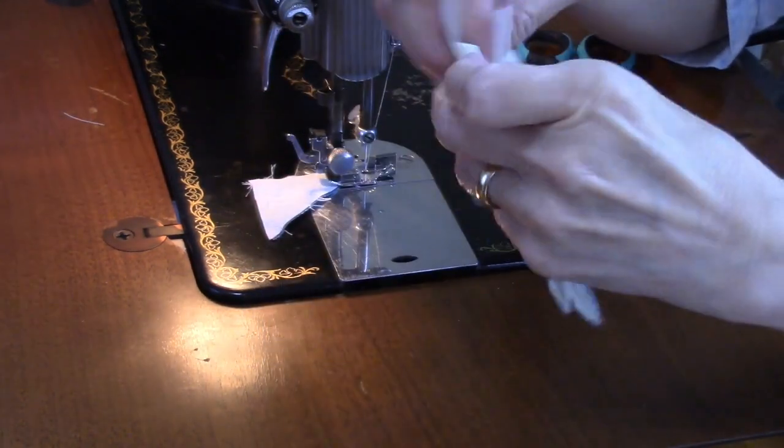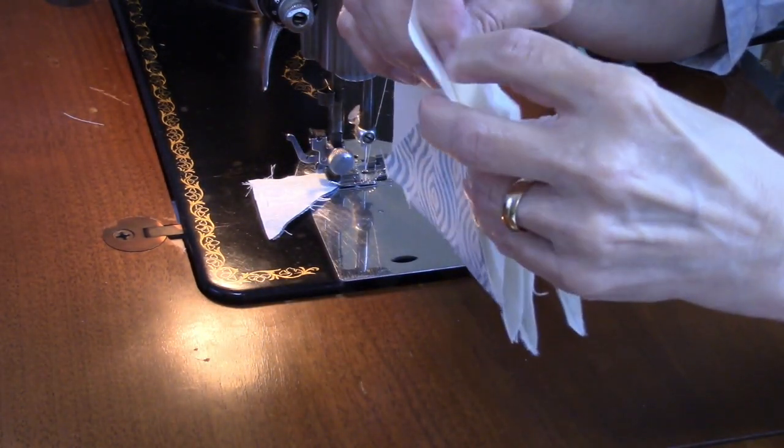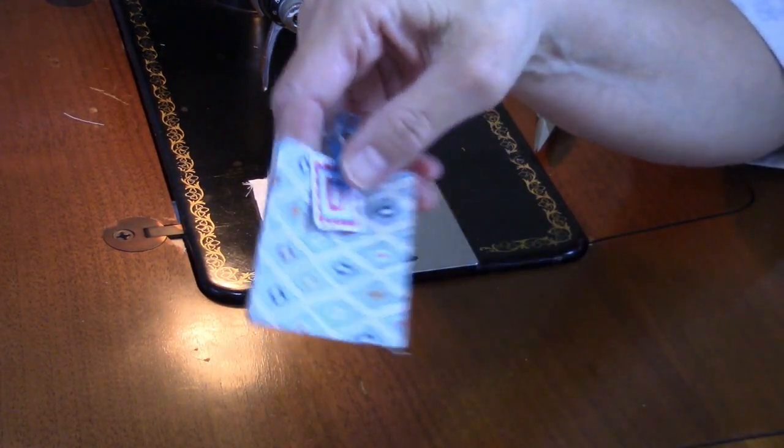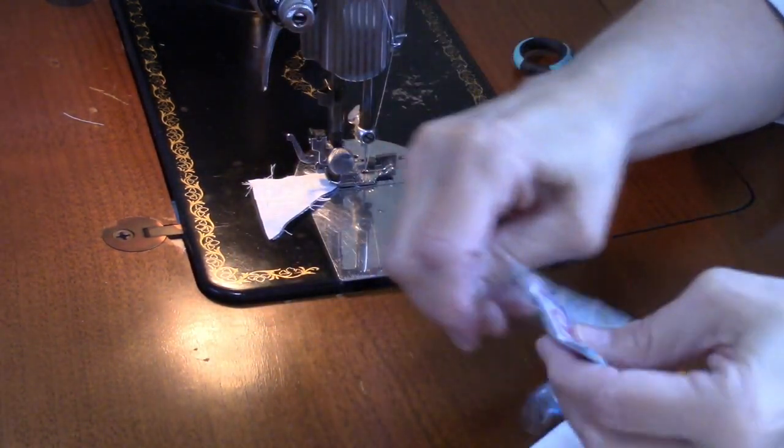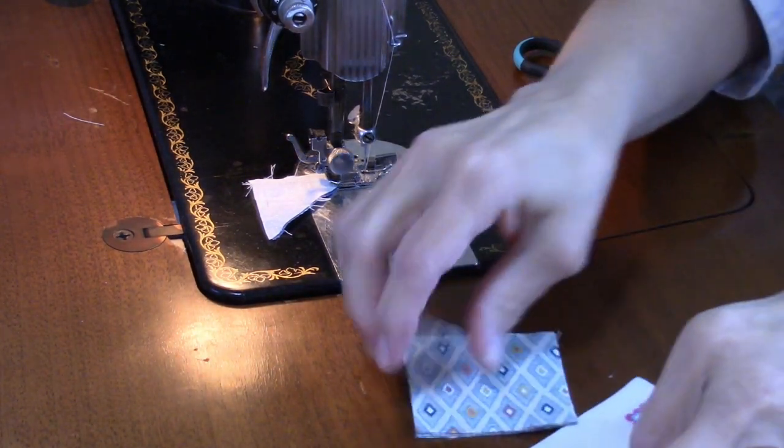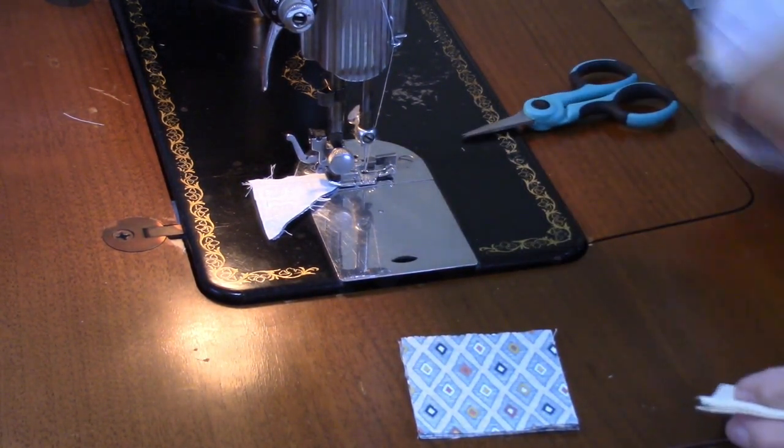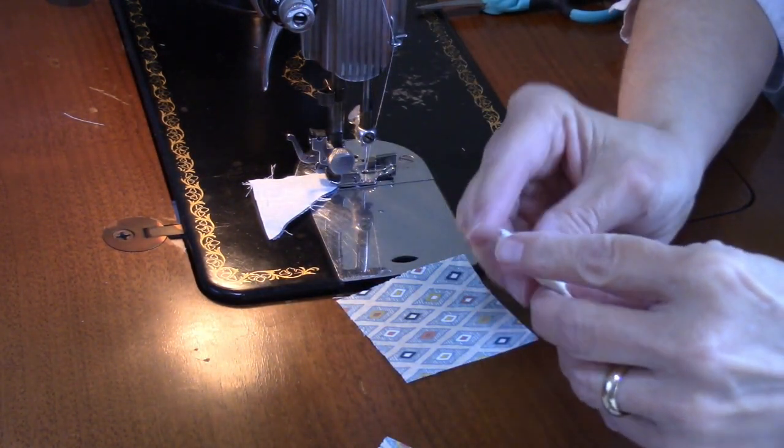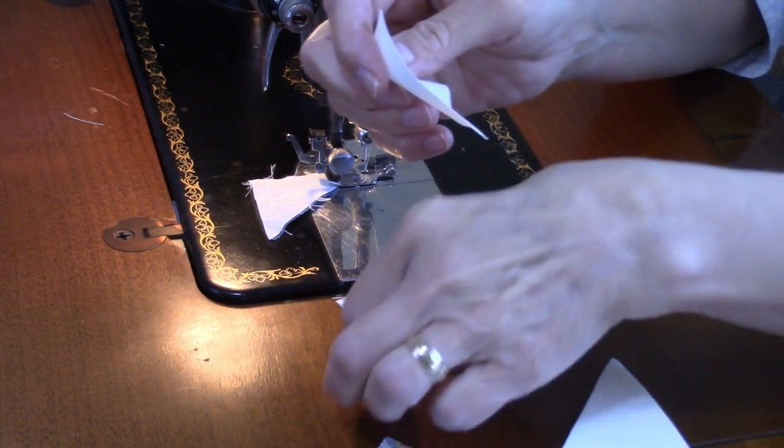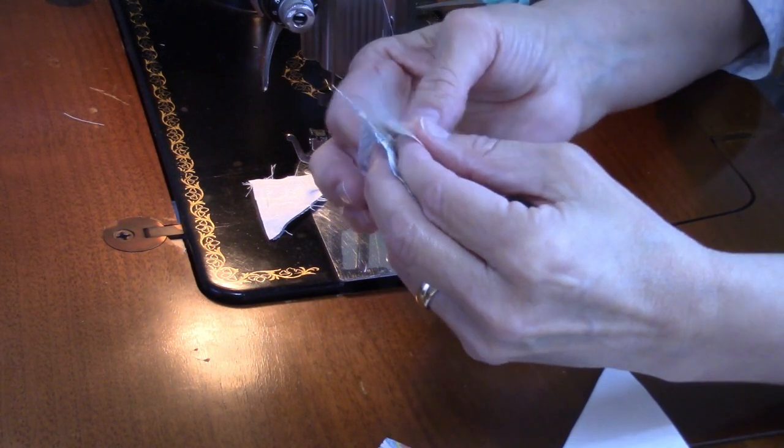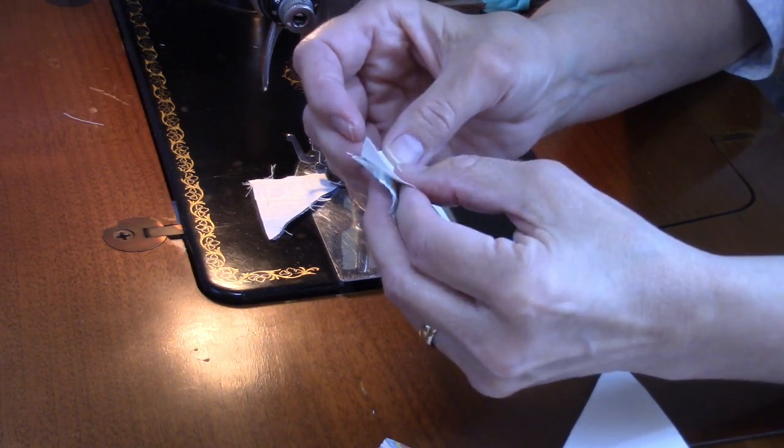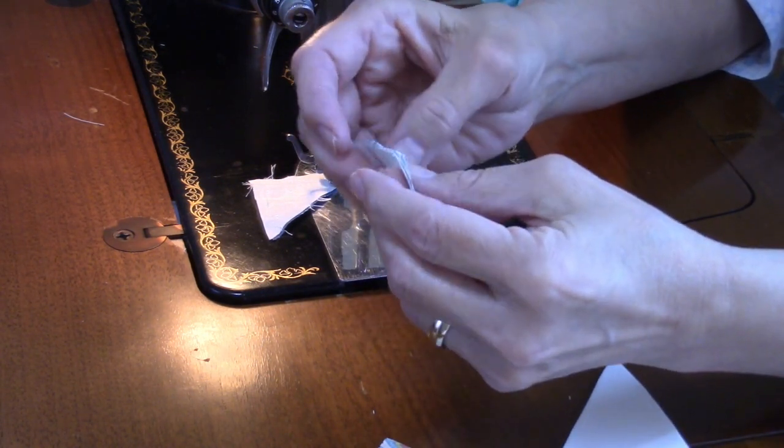Now we have four of these flying geese units. Now we need to make some corner units, and that is going to require the D squares and the G triangles. What we're going to do is take a triangle and we're going to sew that on one side here, so I'm going to flip it this way.